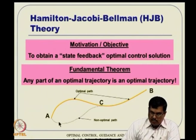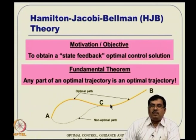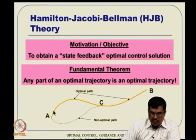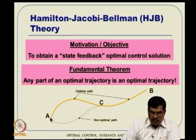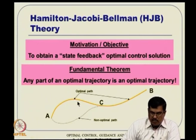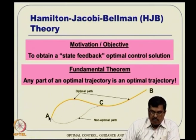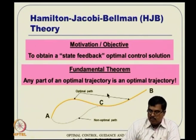The argument goes as follows. Suppose we find some other path from A to C, and from C to B we follow the already-found optimal path. If the alternate A-to-C path had lower cost, then we could have used the dotted line from A to C followed by C to B, giving a lower total cost. But we claimed the original path was optimal — contradiction. Hence the original A-to-C segment cannot be beaten, and any part of an optimal trajectory is an optimal trajectory itself.